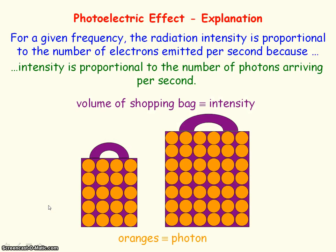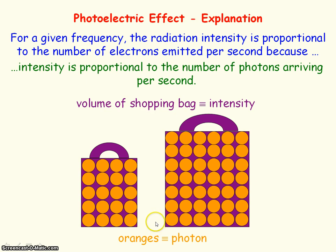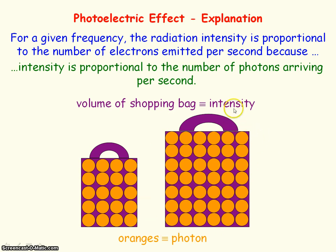An easy way to understand this: consider a shopping bag whose volume represents the intensity of the radiation, and inside the bag are oranges where each orange represents a photon. If we increase the volume of the shopping bag — increasing the intensity — we have more oranges inside. So there are more photons per second with the increased intensity.